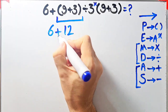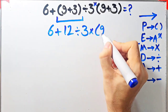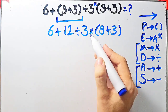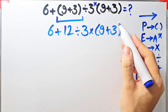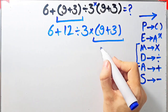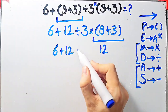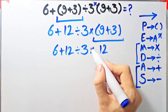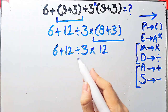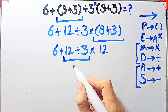According to PEMDAS, first we simplify the parenthesis: 9 plus 3 equals 12. Now we have 6 plus 12 divided by 3, then times open parenthesis 9 plus 3 close parenthesis. We simplify that parenthesis too: 9 plus 3 equals 12. Now we have addition, division, and multiplication. We simplify the division first: 12 divided by 3 equals 4.